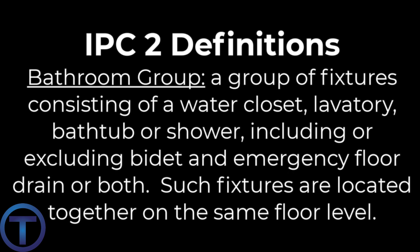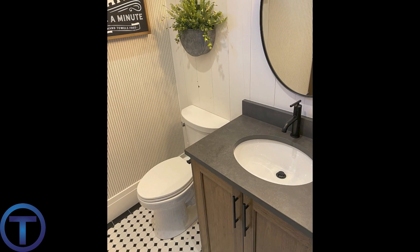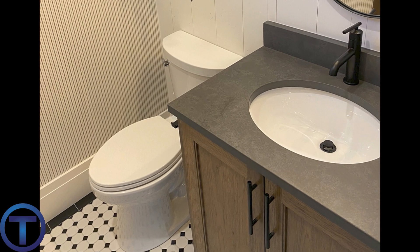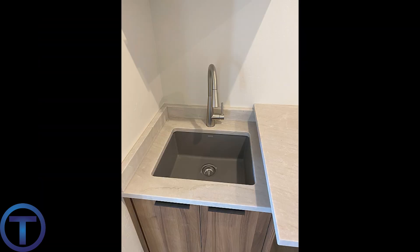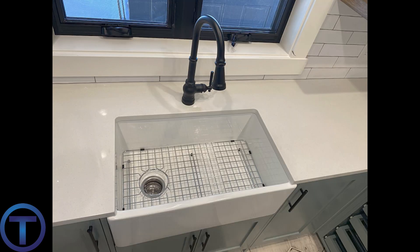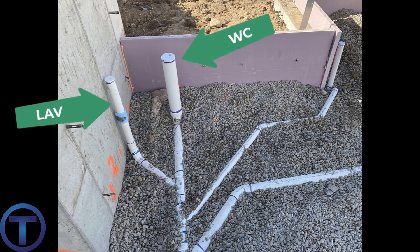The IPC states that a bathroom group is a group of fixtures consisting of a water closet, lavatory, bathtub or shower, including or excluding a bidet and emergency floor drain, where such fixtures are located together on the same floor level. This definition restricts the wet vent to bathroom fixtures only. Other nearby fixtures like laundry sinks, washer drains, and kitchen sinks should be connected downstream around the wet vented bathroom group fixtures.